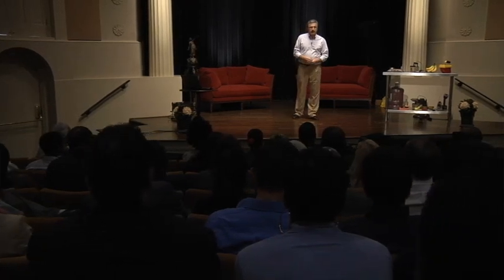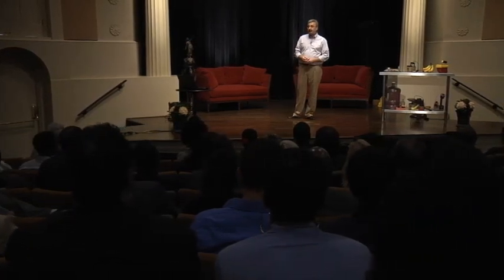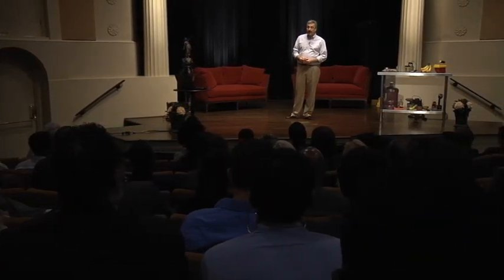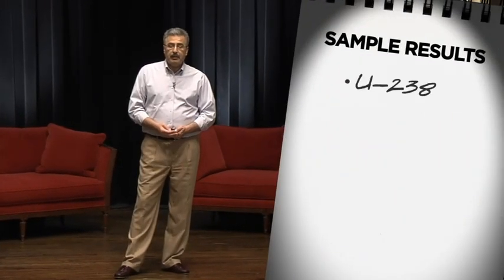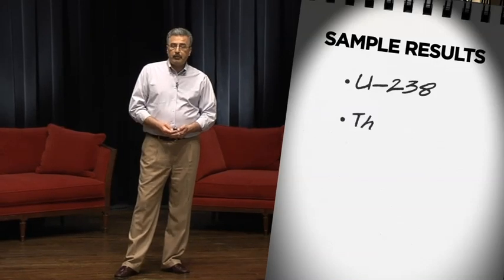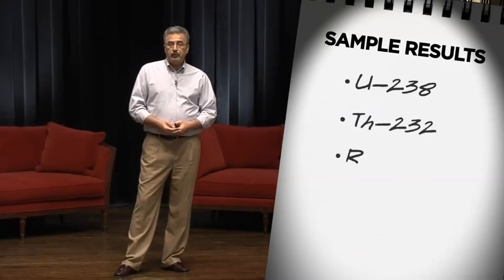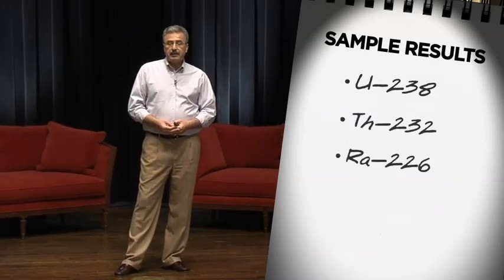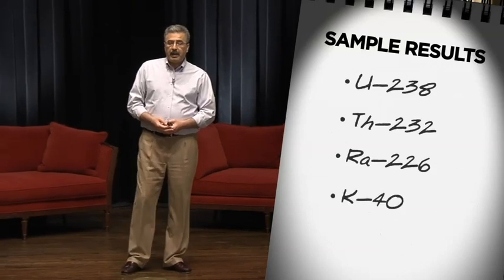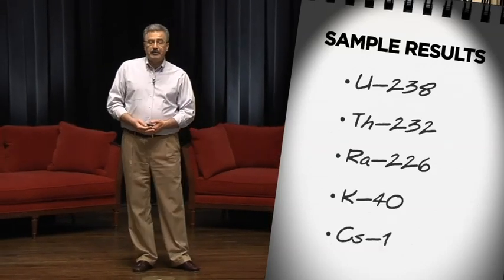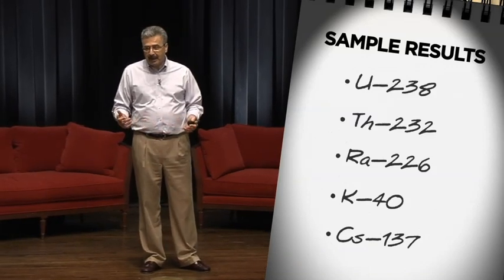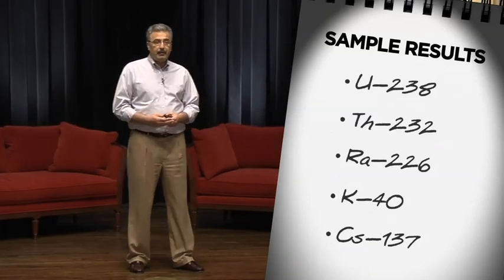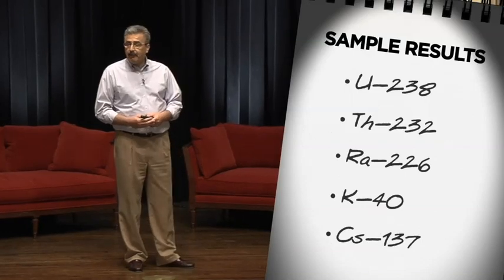I want to show you the test results from a soil sample we had analyzed for radioactivity. This sample of soil contains uranium-238, thorium-232, radium-226, potassium-40, and cesium-137. Now that seems like a pretty contaminated sample, right? Would you like to know where that sample came from?